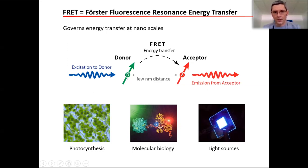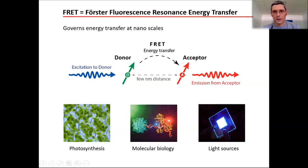FRET governs energy transfer between a donor molecule and an acceptor molecule when they are separated at a distance long enough that there is no direct electron transfer — a few nanometers — but short enough that dipole-dipole interaction occurs, typically between 3 and 10 nanometers. The donor absorbs optical energy from light, transfers it to the acceptor, which then emits light. This is the core principle in photosynthesis and is widely used in molecular biology to monitor protein-protein interaction, protein-DNA interaction, and molecular structures.